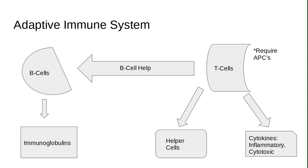Moving on to the adaptive immune system — starting with B cells. B cells are initially activated after the binding of antigens and they secrete antibodies. A B cell receptor is a membrane immunoglobulin molecule. An estimated 100,000 B cell receptors are expressed per B cell, and once activated, the B cell will secrete the immunoglobulin to initiate a full antibody response.